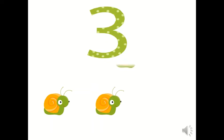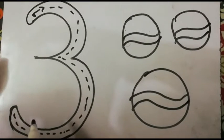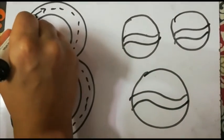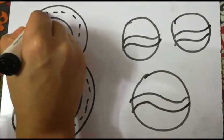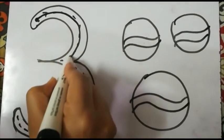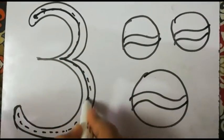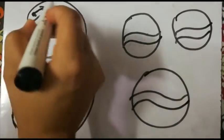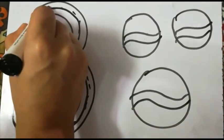Three! Now let's learn how to trace number three. We have to start from this dot, go a little up, go round, make a small tummy, then make a big one. Let's do it one more time — start from the dot, go...